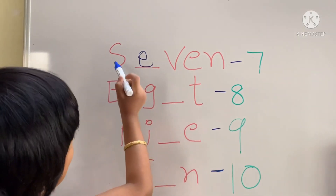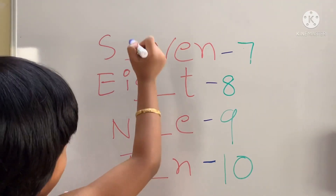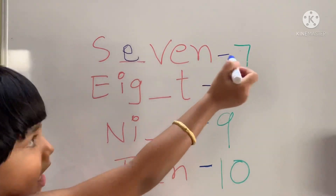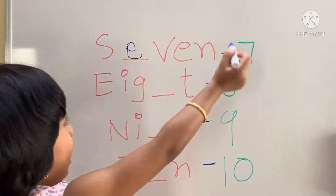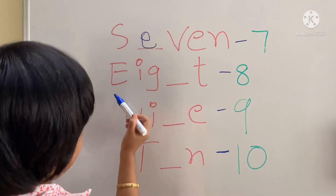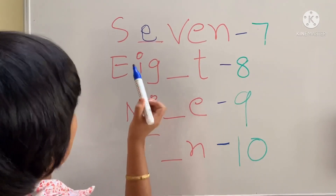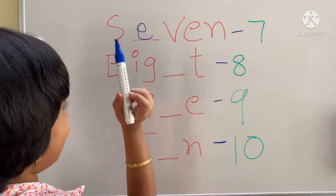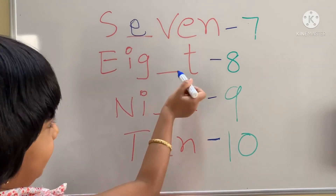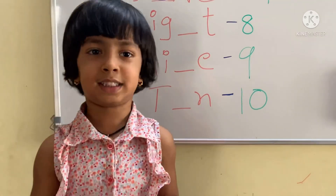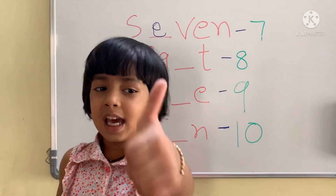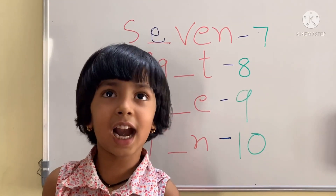S, E, V, E, N — Seven. E, I, G, H, T — what is missing children? Yes children.